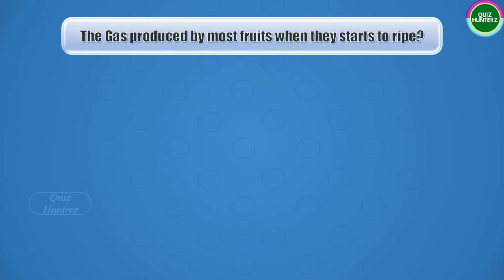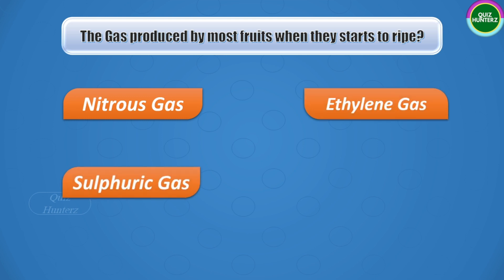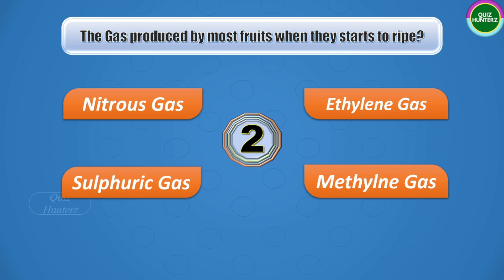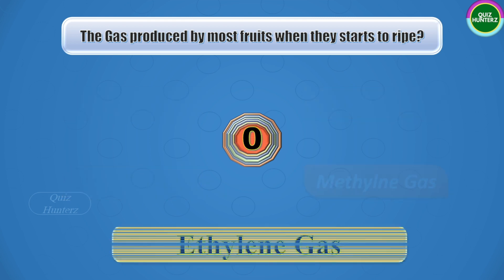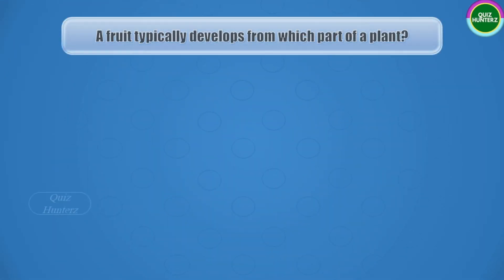Next question: the gas produced by most fruits when they start to ripen — is it nitrogen gas, ethylene gas, sulfuric gas, or methane gas? The time starts now. And the correct answer is ethylene gas.